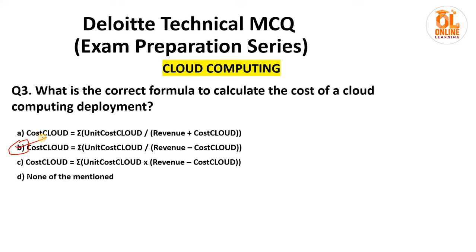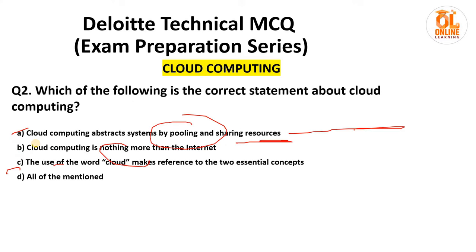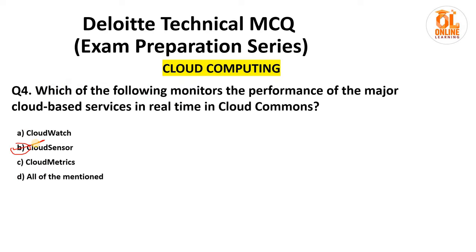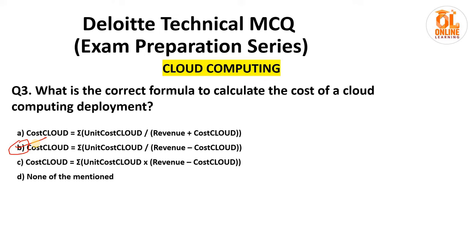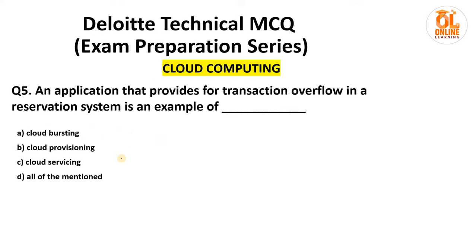Which of the following monitors the performance of major cloud-based services in real time? The answer is option C: cloud center. You should be aware of cloud cost, cloud center, cloud watch, and cloud matrix as terminologies. The question this year might be based on cloud watch or cloud matrix or any such cloud terminology. Just search these keywords and learn one or two lines about each — that will help to answer such questions.